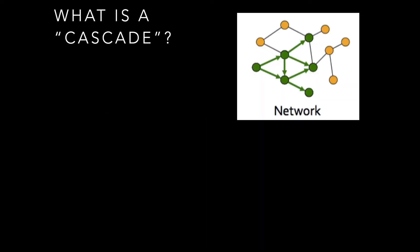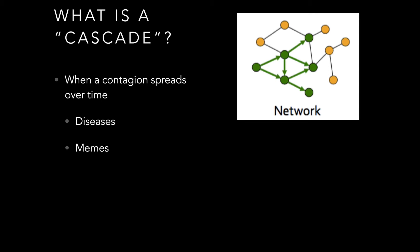In terms of defining information cascades, what is a cascade? Given some network, a contagion will spread in this network, and cascades define how this contagion spreads. We have examples like diseases and memes — how diseases spread in real networks or social networks, how memes spread in social networks.